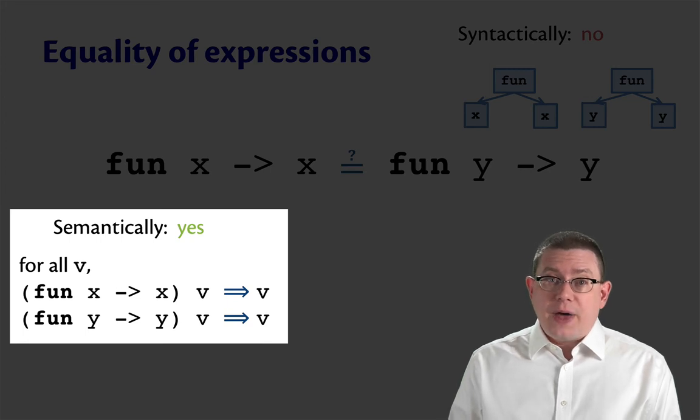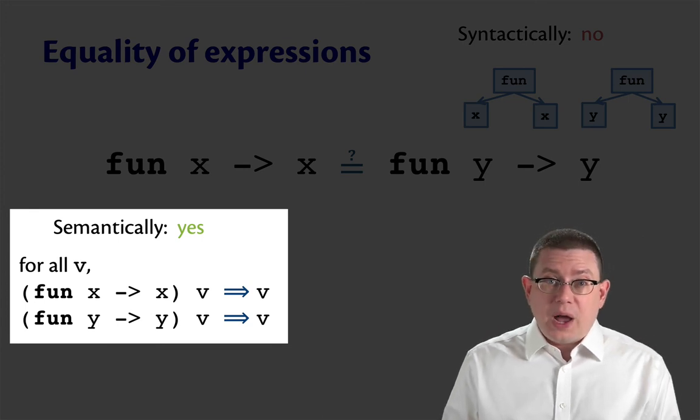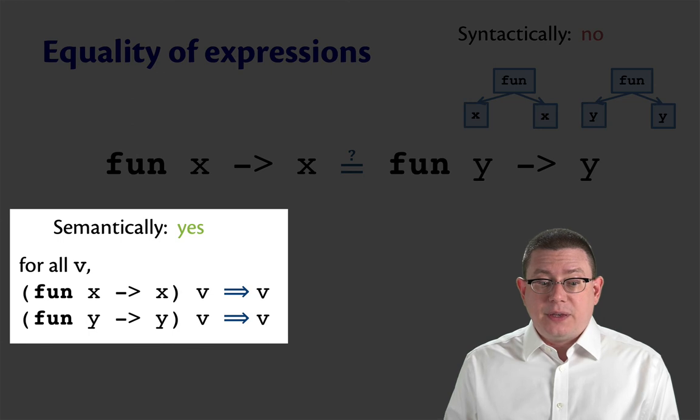...and it is that both functions will always evaluate to the same value when passed to the same input. Or in other words, for all values v, if you take fun x arrow x and apply that to v, you get v. Likewise, if you take fun y arrow y and apply that to v, you get v.